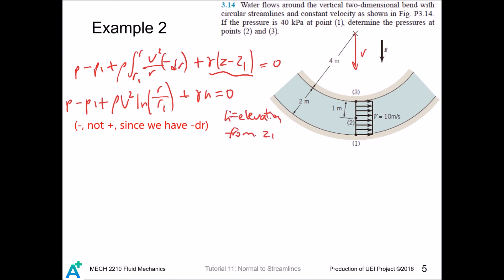Now we have pressure equals p1 plus rho v squared times natural log. If we look at point 2, first r2 is 5 meters, and we continue to substitute the values.